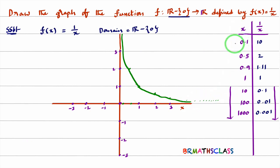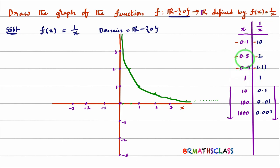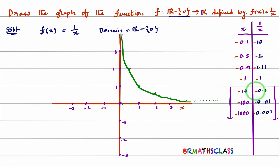If I take negative x values — for example, x = -0.1 — when x is negative, 1/x is also negative. So 1/(-0.1) = -10. When x = -0.5, 1/x = -2. When x = -0.9, 1/x = -1.11. When x = -1, 1/x = -1. When x = -10, 1/x = -0.1. So when x is negative, 1/x is also negative, meaning the x-coordinate is negative and the y-coordinate is also negative.